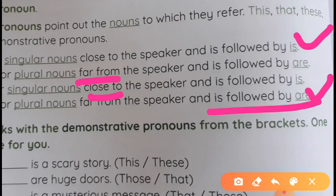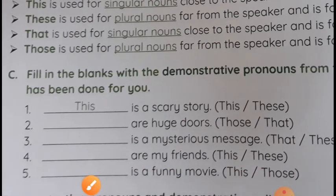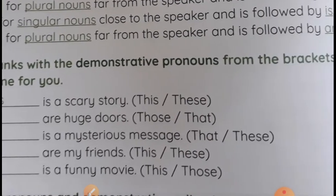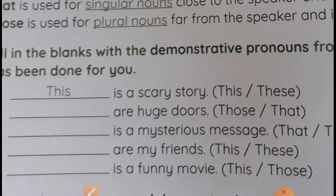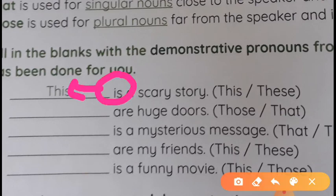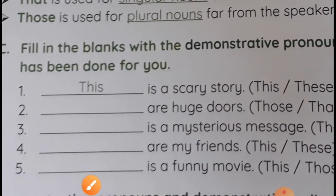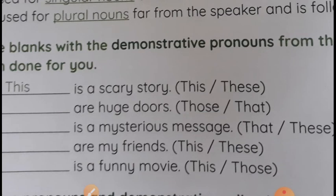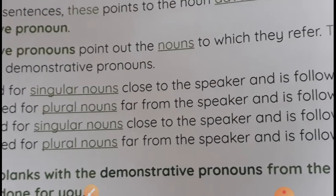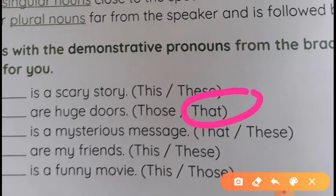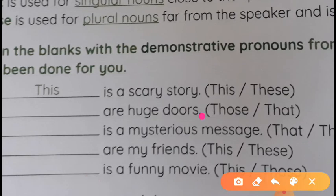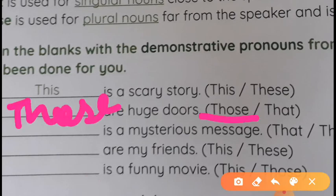Let's see Exercise C: fill in the blanks with demonstrative pronouns from the brackets. Number one is already done: 'This is a scary story' — 'this' is followed by 'is.' Number two: blank 'are huge toes.' Since 'this' and 'that' are followed by 'is,' and we need 'are,' and it is far from the speaker, the answer is 'those.'